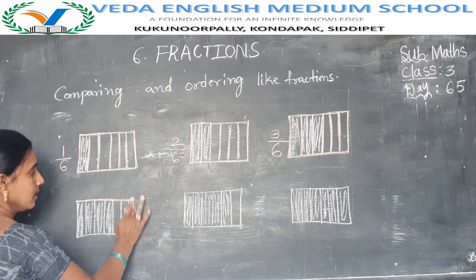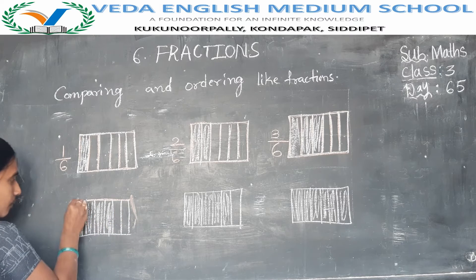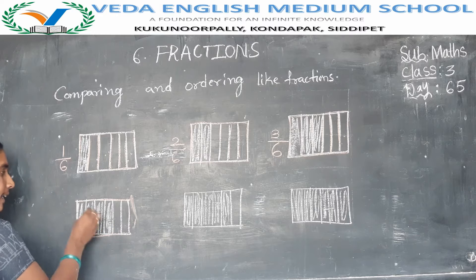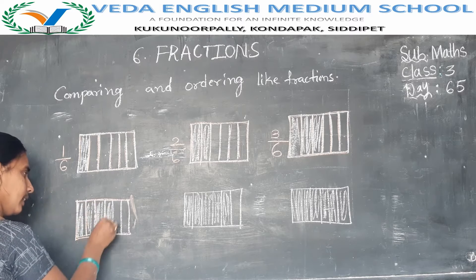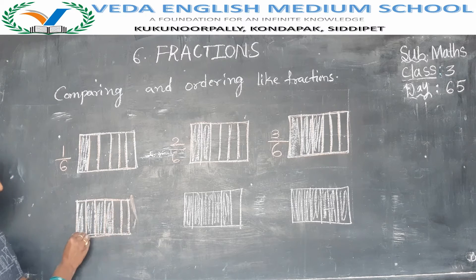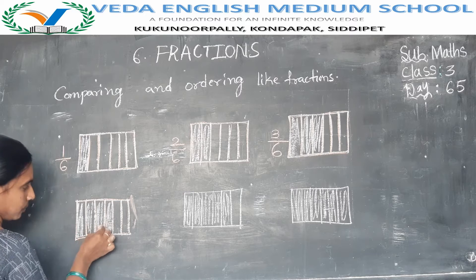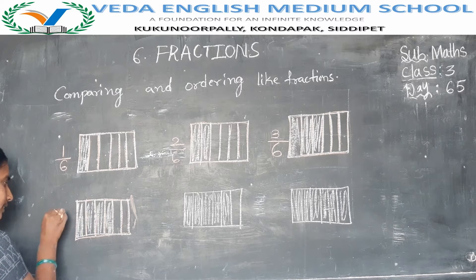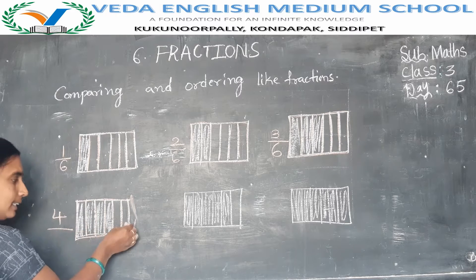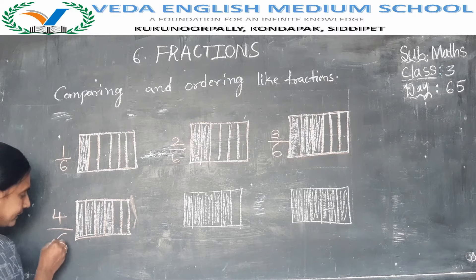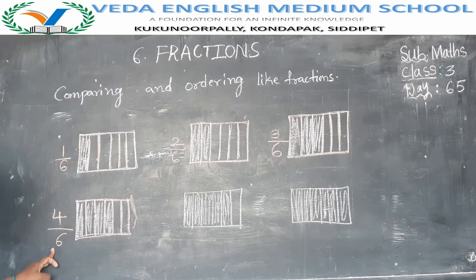Here also Nana, 1 box divided into 6 pots: 1, 2, 3, 4, 5, 6. But here 4 pots are shaded: 1, 2, 3, 4. So numerator is 4, total is 6 pots. So denominator is 6. This fraction is 4 by 6.